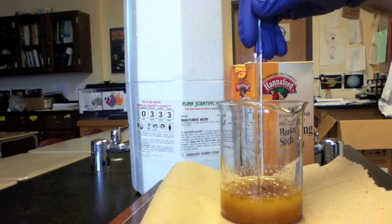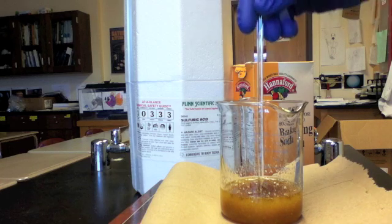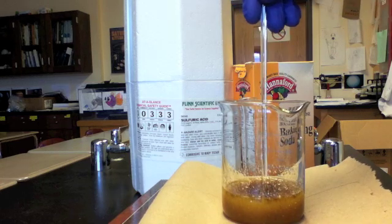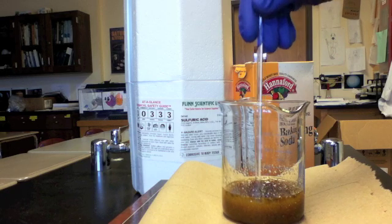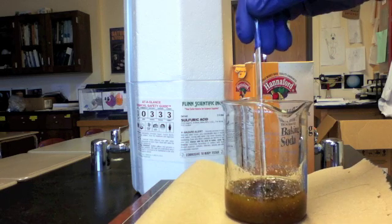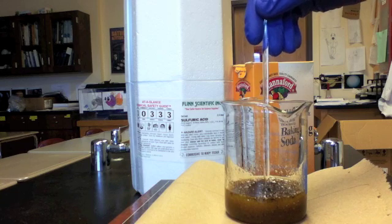When the sulfuric acid is first added, it causes a series of color changes from the original white of the sugar to yellow to brown to black. Things don't really get going, though, until we add some water, which I will do in a moment.